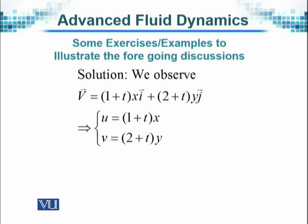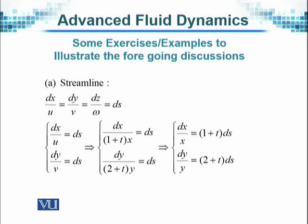Very simple question. The velocity vector, first of all, we write it down for our understanding and clarity. The velocity in the x direction is u component, normally we denote it by u, is 1 plus t into x. In the y direction, the velocity component is v equals 2 plus t into y, and from this we have to calculate the derivatives and so on.